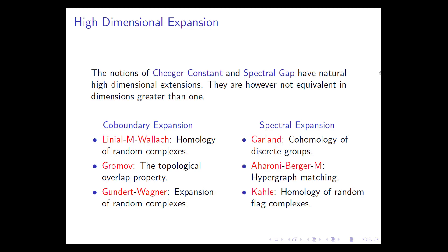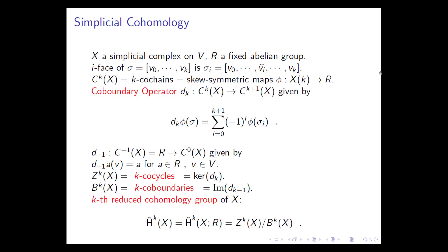Co-boundary expansion is defined in terms of simplicial co-homology. We have a simplicial complex on V, with R a fixed abelian group (usually Z₂). A k-cochain is a skew-symmetric map on ordered simplices—skew-symmetric meaning that exchanging v₀ and v₁ reverses the sign. The co-boundary operator δₖ maps Cₖ to Cₖ₊₁; δₖ(φ) on a (k+1)-simplex is the alternating sum of φ on the faces. The kernel of δₖ gives the k-cocycles, the image of δₖ₋₁ gives the k-coboundaries, and their quotient is the reduced k-cohomology.